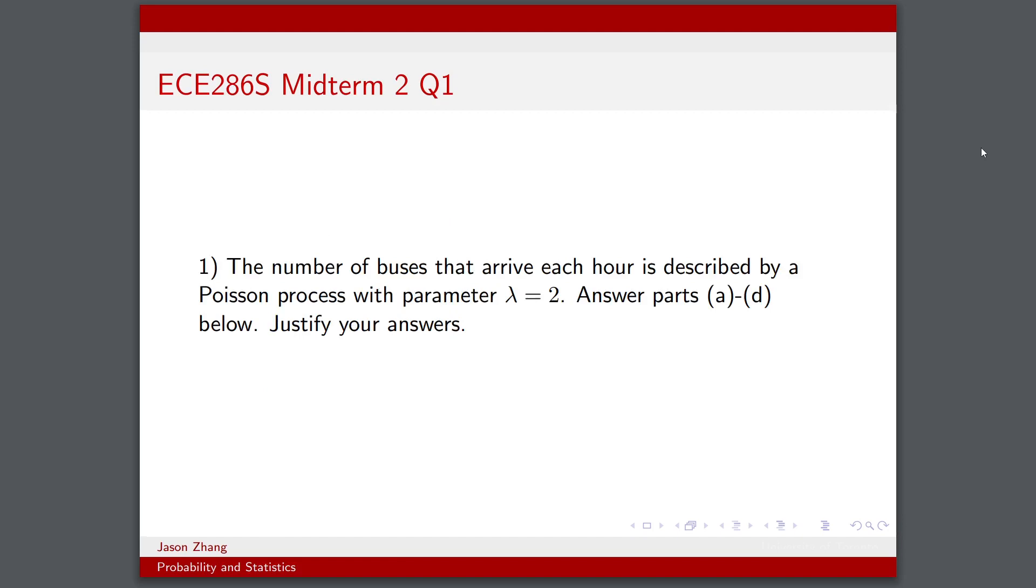So this is essentially all the context we're given. The number of buses that arrive each hour is described by a Poisson process with parameter λ = 2. Answer the following parts below with justification.